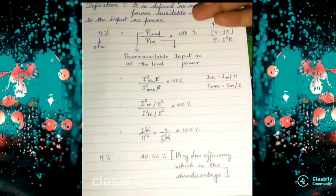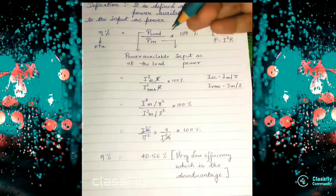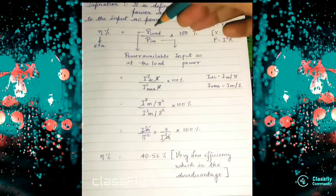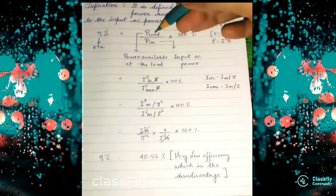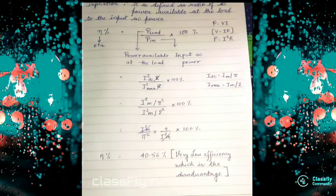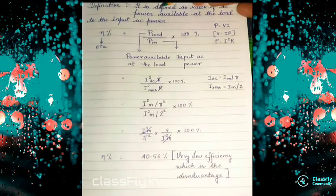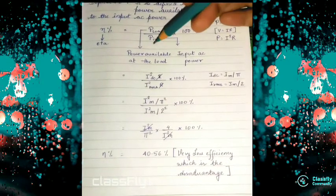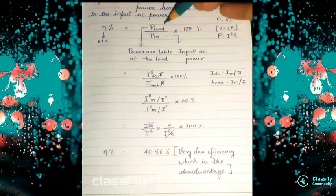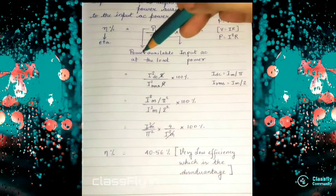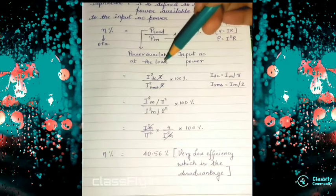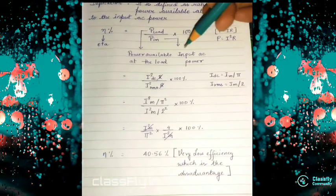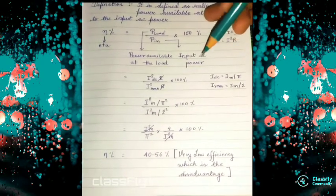It is the ratio of P_load by P_in. P_load is the DC power available at the load, and P_in is the input AC power.